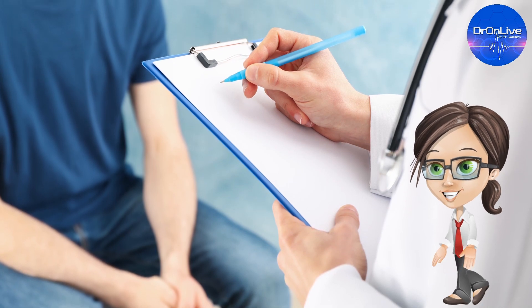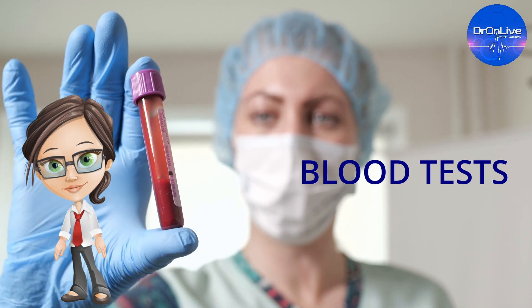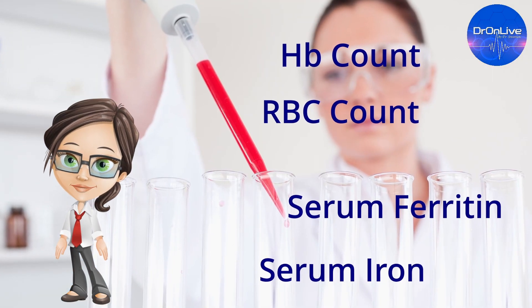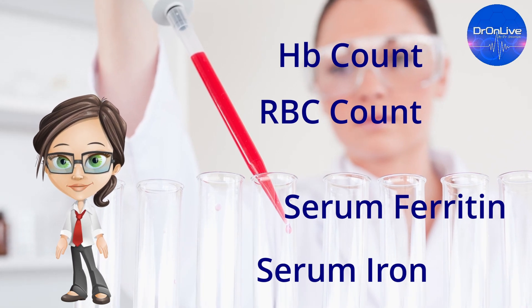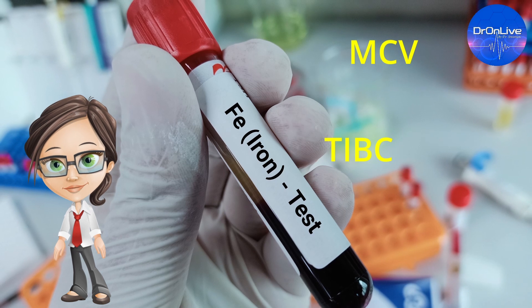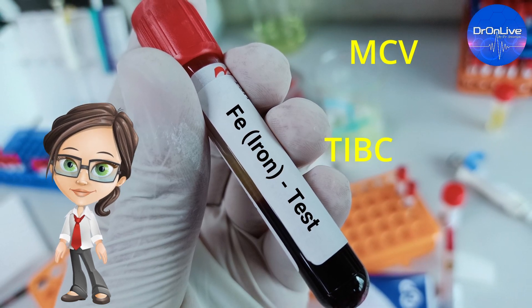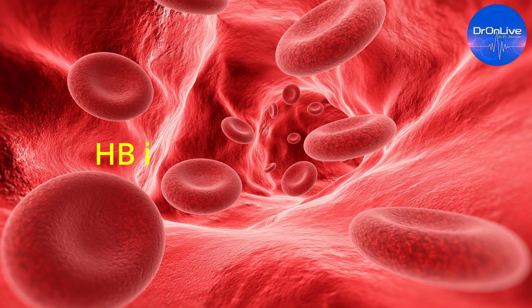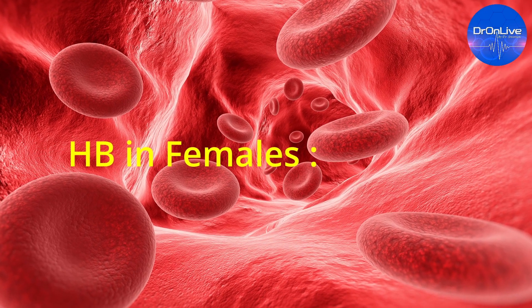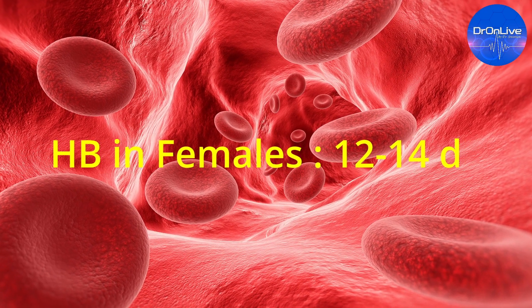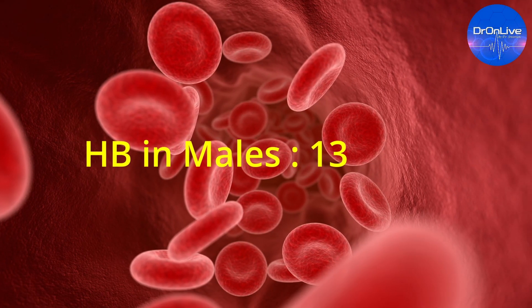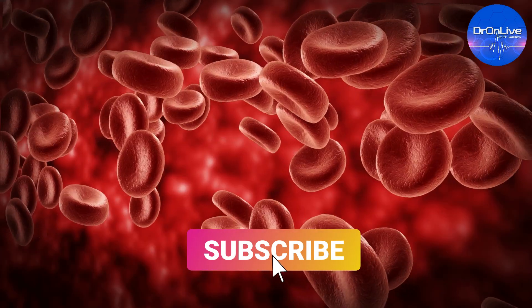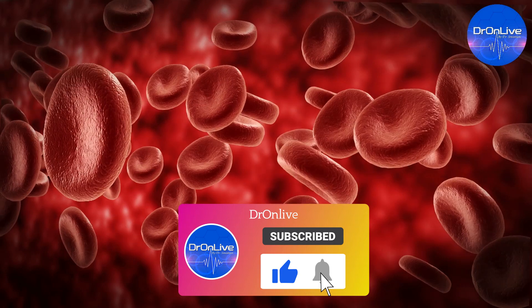To confirm the type of anemia, a physician may advise blood tests including hemoglobin count, RBC count, serum ferritin, serum iron, mean corpuscular volume, and total iron binding capacity. Normal hemoglobin count in females is around 12 to 14 g/dL, and in males around 13 to 15 g/dL, though it varies with age, lifestyle, and genetic factors.